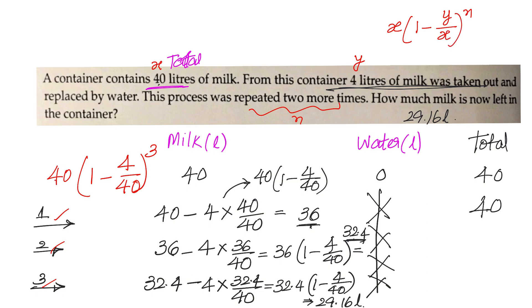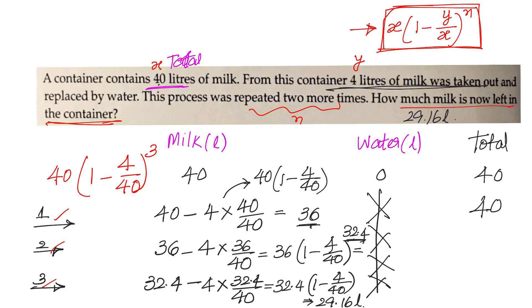Let us check: x is 40, y is 4, n is 3 times. So this formula gives the milk now left in the container. Whatever liquid we are talking about, how much is left after n dilutions, if you have initially x liters and remove y liters replacing it with water — this will be your answer.